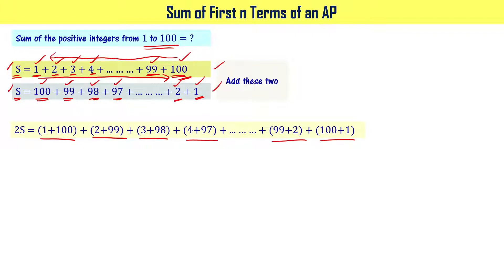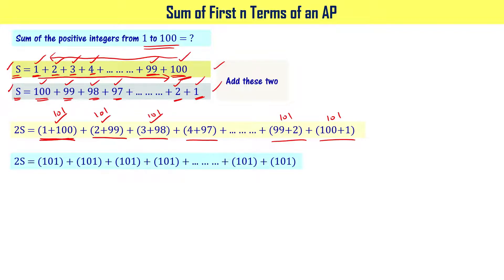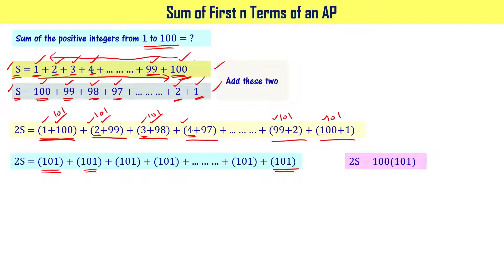Each pair — 1+100, 2+99, 3+98 — gives only one value: 101. Now, how many such pairs are there? Counting: 1, 2, 3, 4 ... 99, 100 — that is 100 times. So 2S equals 100 times 101.